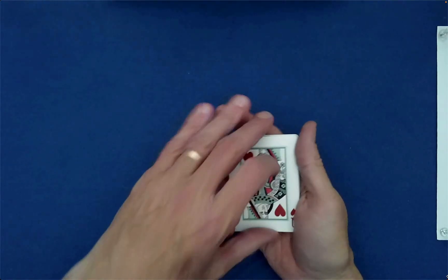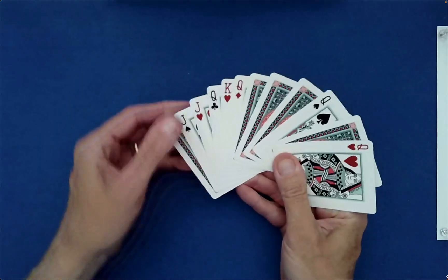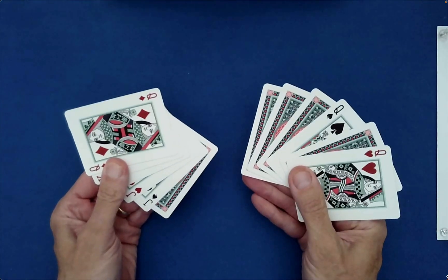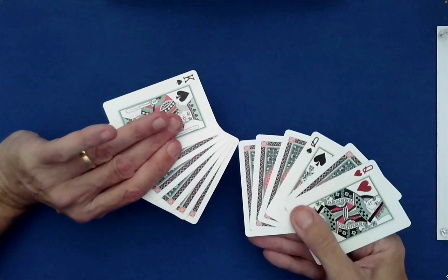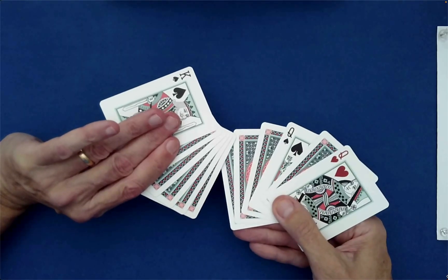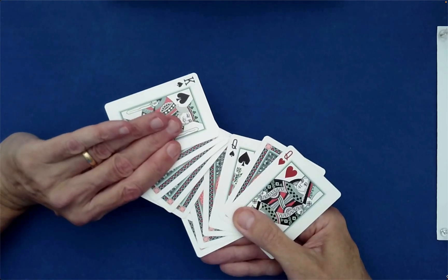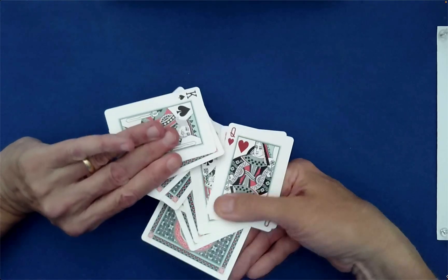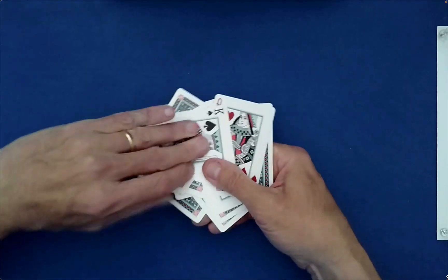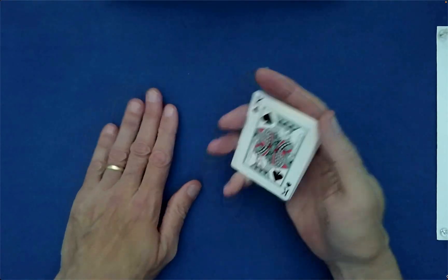Now we're going to do something interesting with a faro shuffle. If you've seen the faro shuffle before, this is where you split the cards exactly in half. But what we're going to do is flip them the other way, and then you just perfectly interlace them. There's technically two ways to interlace them: one leads to a faro-in and the other one's a faro-out.